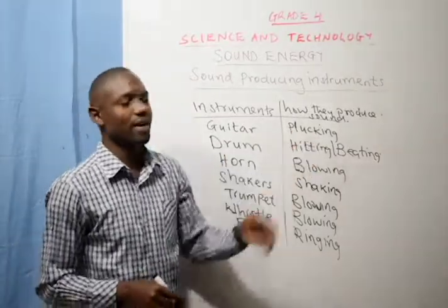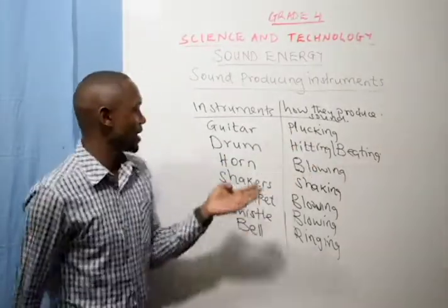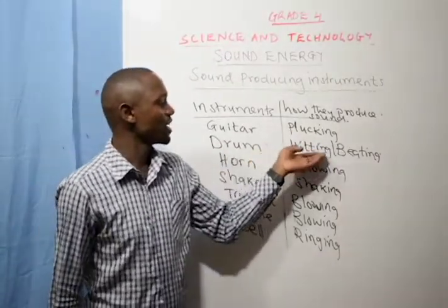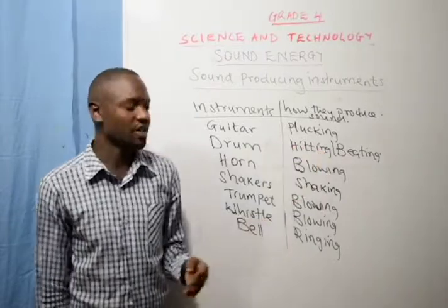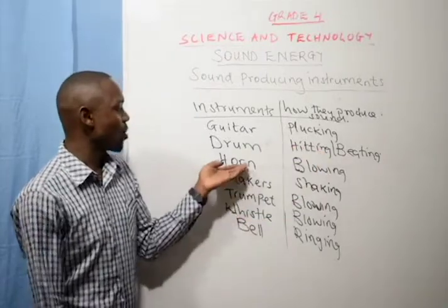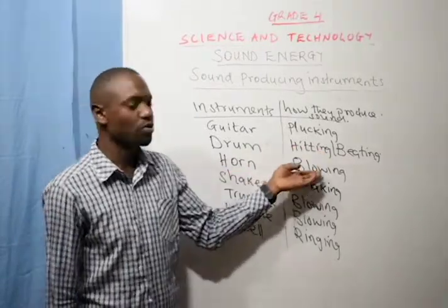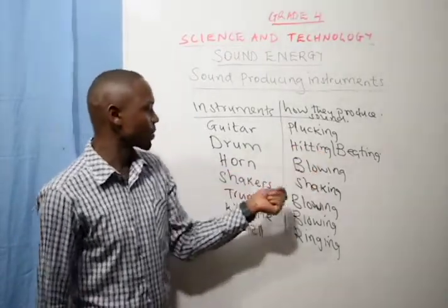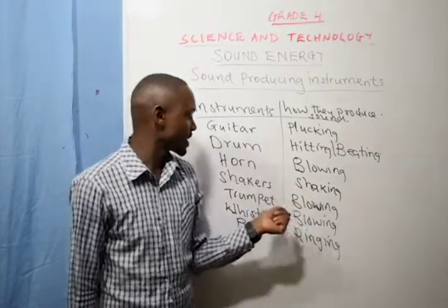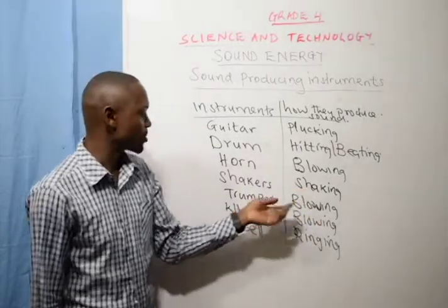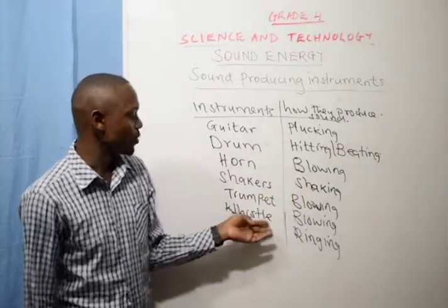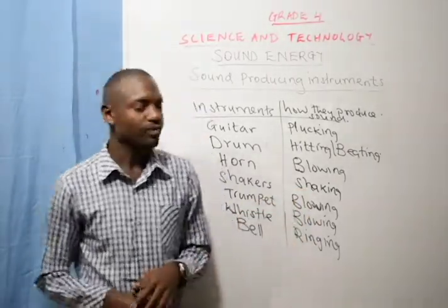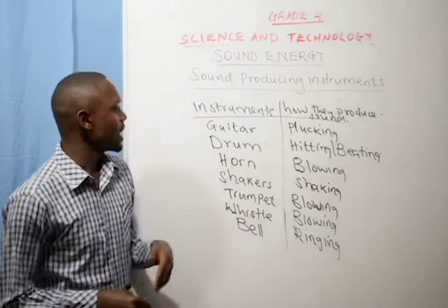A guitar will produce sound through plucking. A drum will produce sound through hitting or beating. A horn will produce sound through blowing. Shakers will produce sound through shaking. A trumpet through blowing. A whistle through blowing. And the bell through ringing.